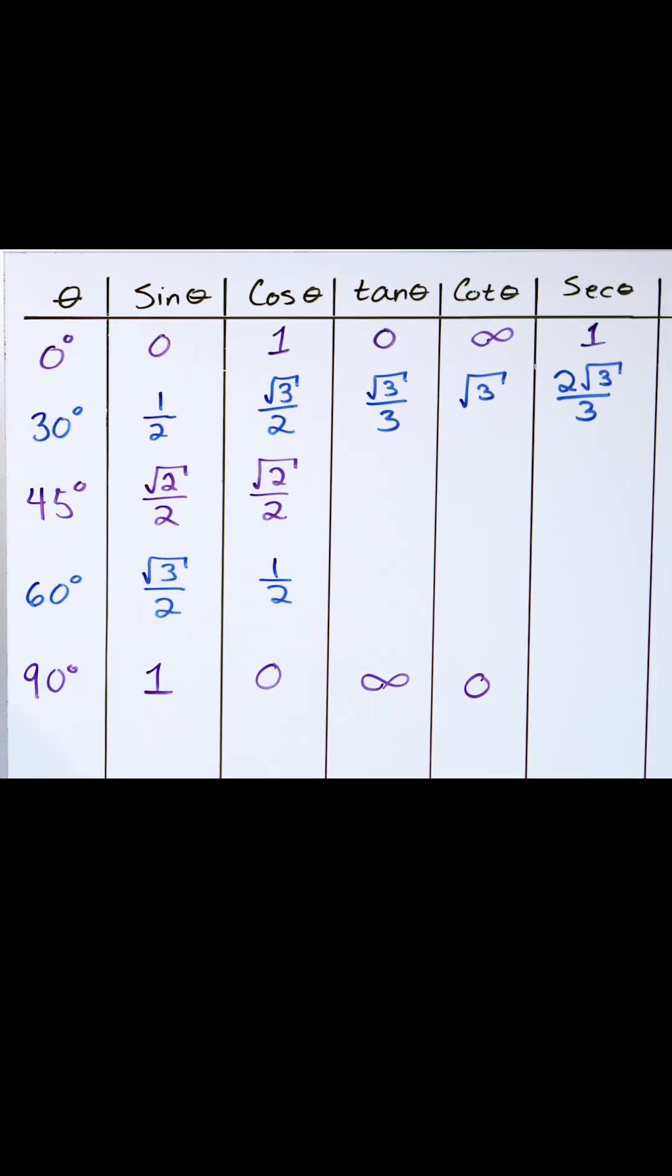What is the secant? The secant is one over the cosine, but the cosine was zero. So one over zero, again, goes back to being infinity.